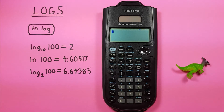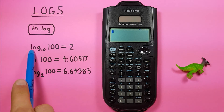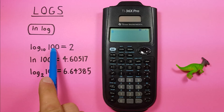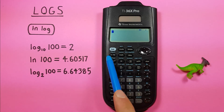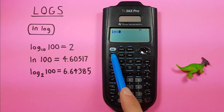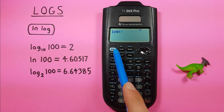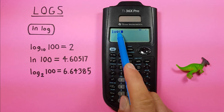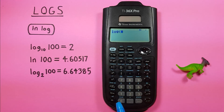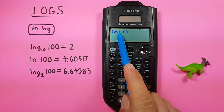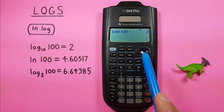Logs on this calculator are really convenient because it's all in one key. To start, if we just want to do our basic log, which is log base 10 of 100, all we have to do is press the ln log key once, twice, and you see we get 'log blank'. We put our 100 in the blank there and press enter, and we get the result for log base 10 of 100, which is 2.